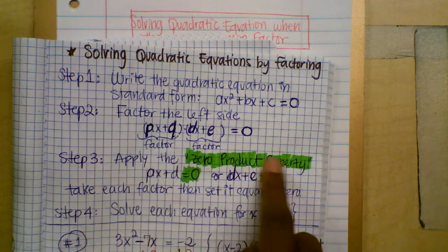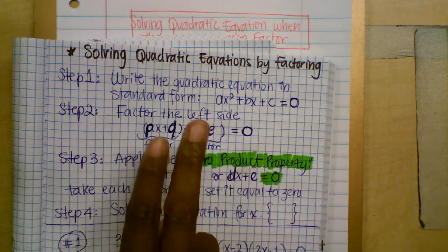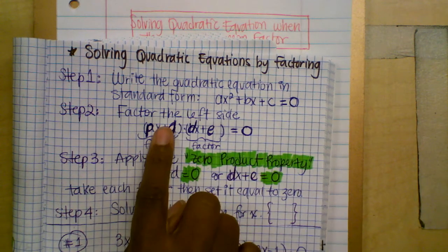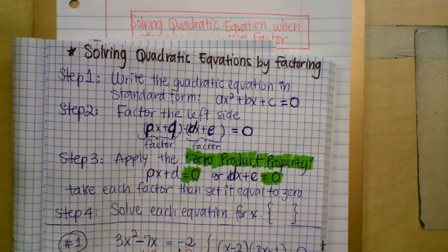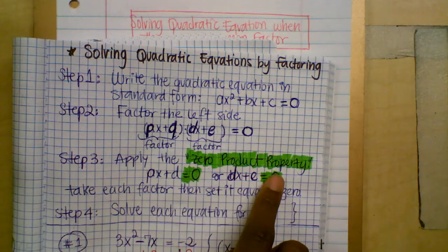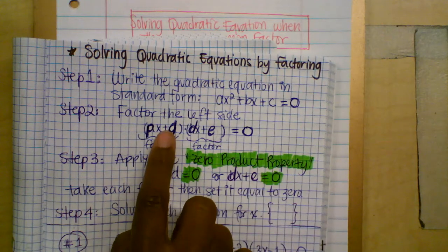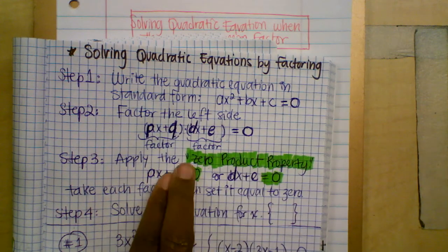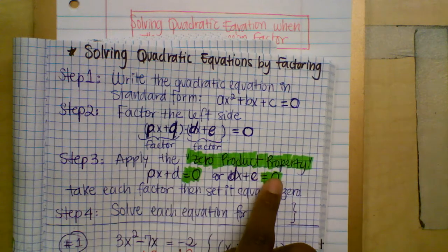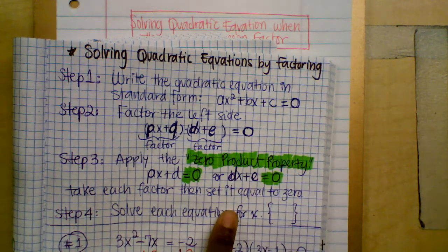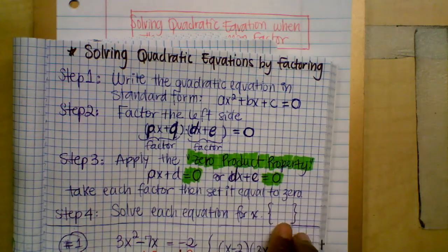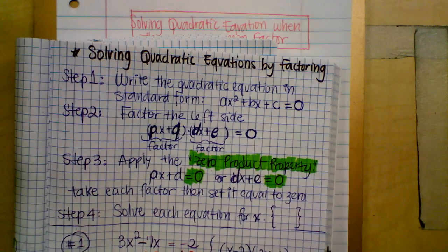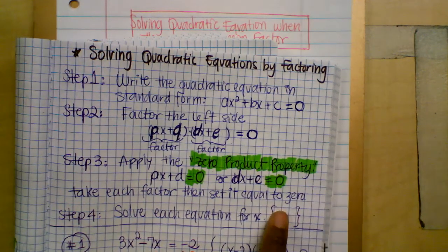Secondly, you're going to apply the zero product property. If two factors equal zero, it means that either one of those two factors is equal to zero, because anything times zero is zero. So that's why you want to take each factor and set it equal to zero, and then you solve for x. Use two single braces to write inside the solution the value for x.